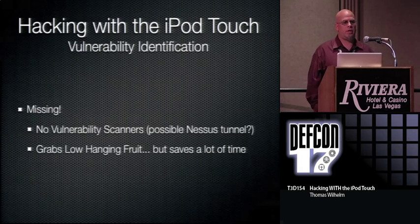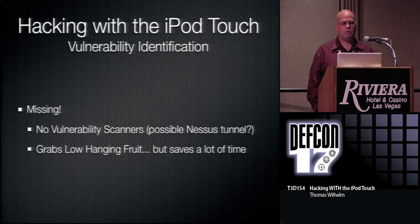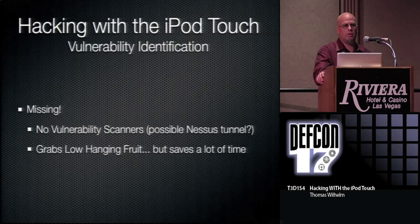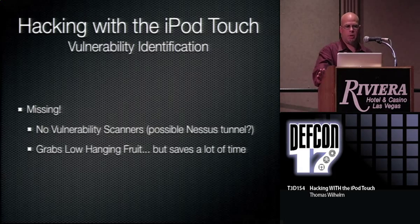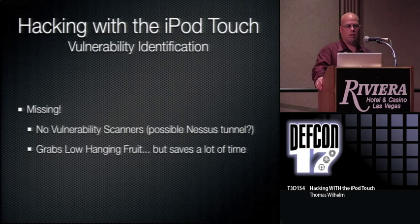For vulnerability identification, there's a gap — not a lot of tools have been ported. Nessus and Core Impact are the obvious ones, but nothing has been easily ported to the phone. With Core Impact, you could probably set up a remote shell and pivot attacks into the network. For low-hanging fruit, you can still grab exploit code online and compile whatever you need, including fuzzing tools.